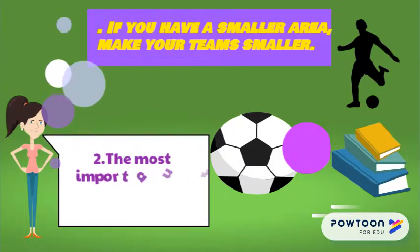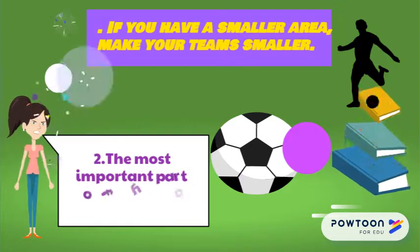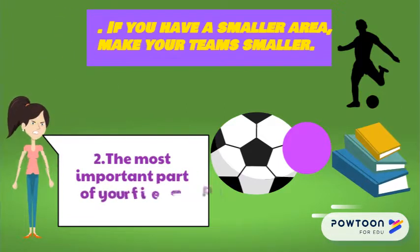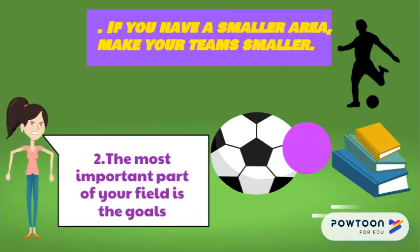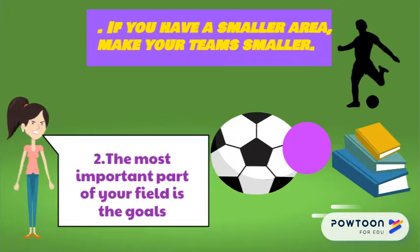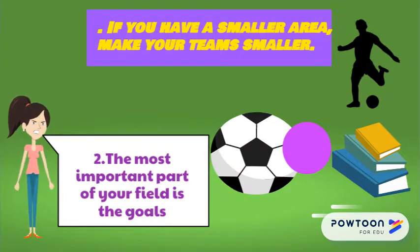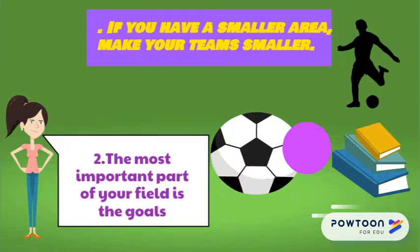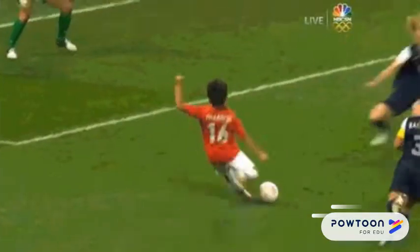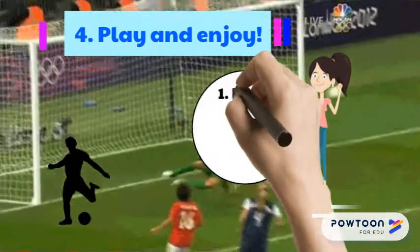Number 2: The most important part of your field is the goals. You can put something soft like jerseys on the ground to show the left and right sides of the goals. Number 3: Choose one of your classmates to be the referee. Number 4: Play and enjoy.